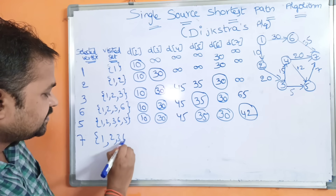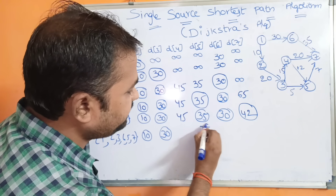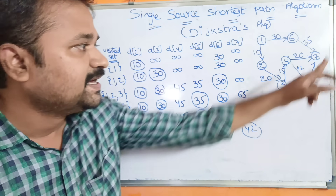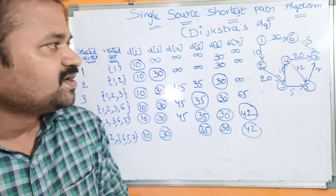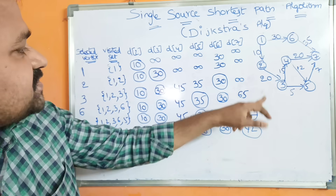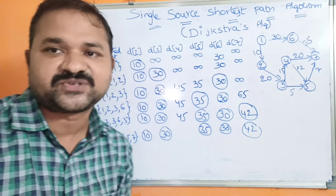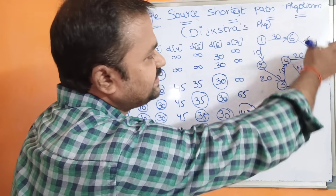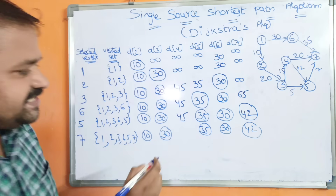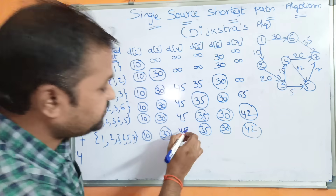The visited set is now {1, 2, 3, 6, 5, 7}. Costs of 2, 3, 5, 6, and 7 are already calculated. Now we explore vertex 7. The adjacent vertices of 7 — there are none, since edges come into 7 from 6, 4, and 5, but from 7 there are no outgoing edges. So we write the previous values only. There is only one remaining vertex — vertex 4 — which becomes the next vertex.